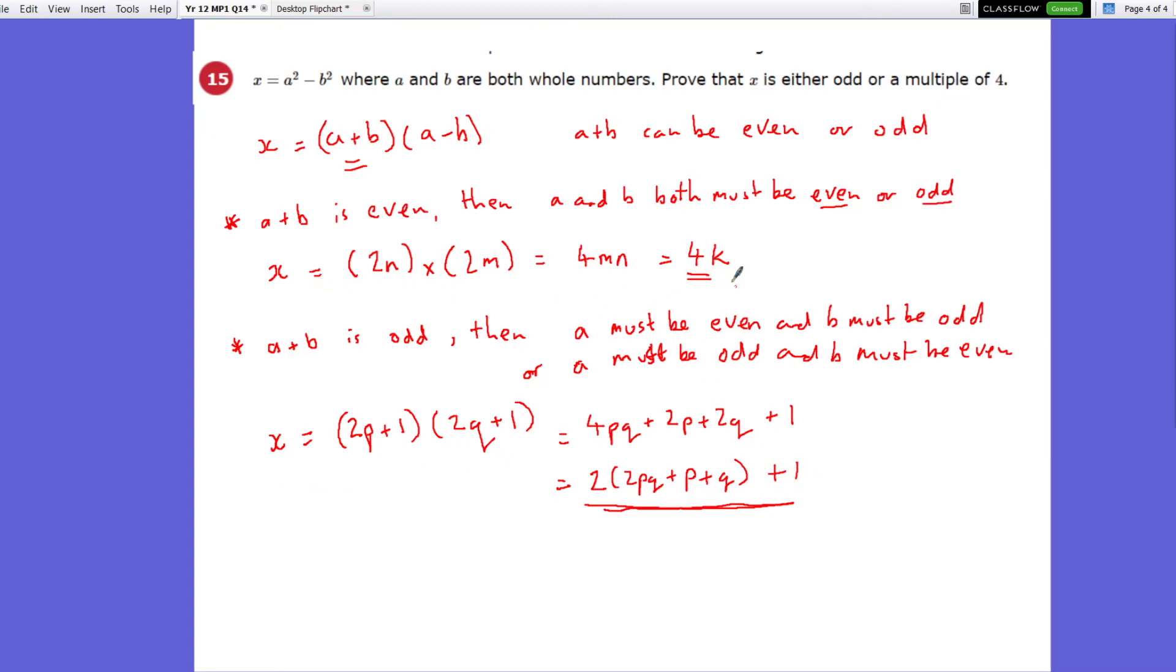So in this case, x is a multiple of 4, in this case, x will end up being some multiple, let's just call that 2s plus 1, which is odd. So we have proved that x can either be odd or multiple of 4.